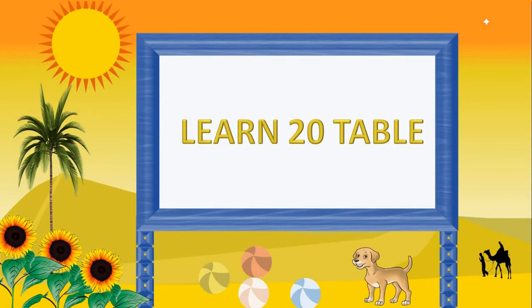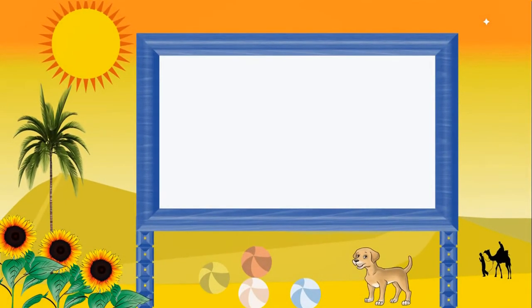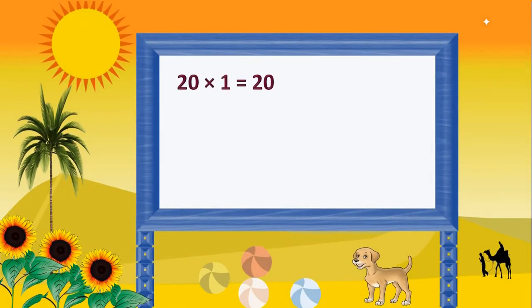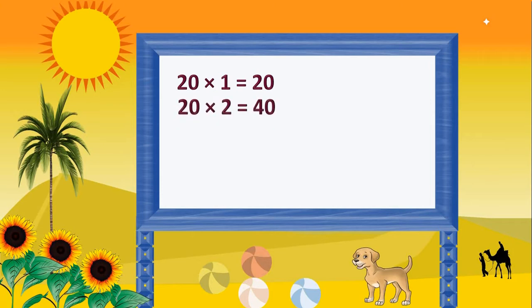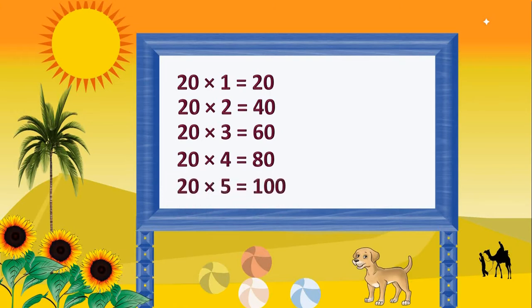Learn the 20 times table. 20 times 1 is 20, 20 times 2 is 40, 20 times 3 is 60, 20 times 4 is 80, 20 times 5 is 100.